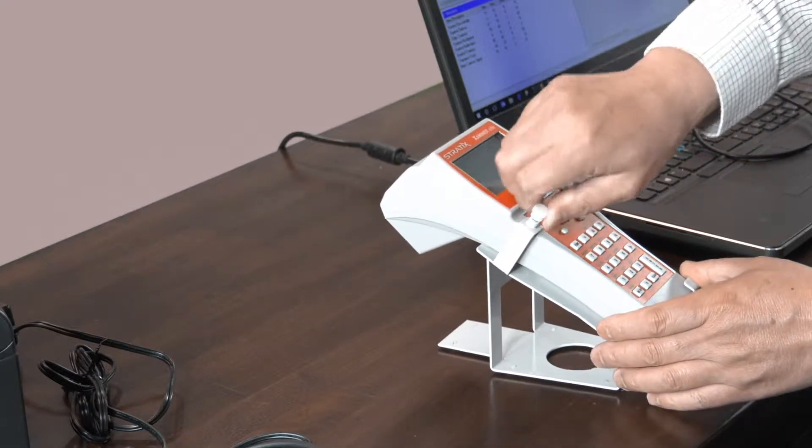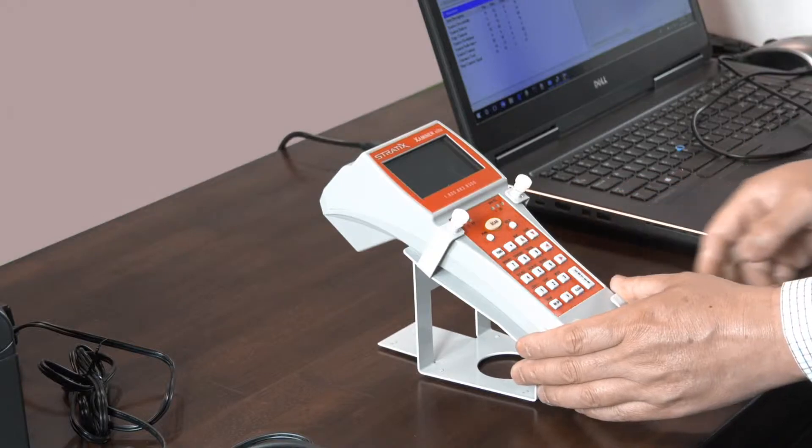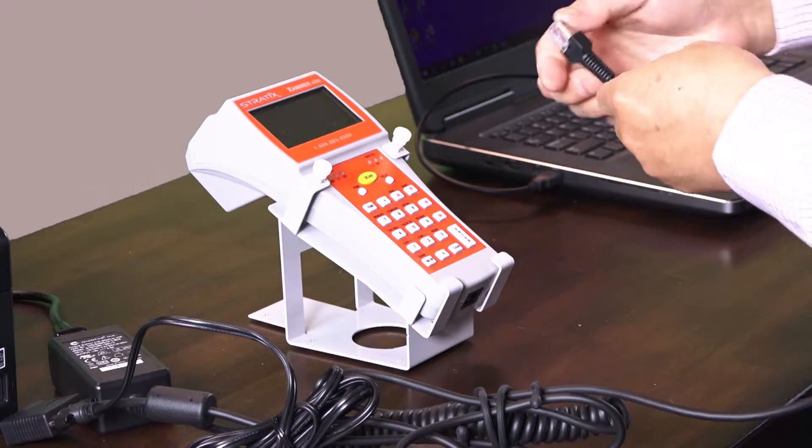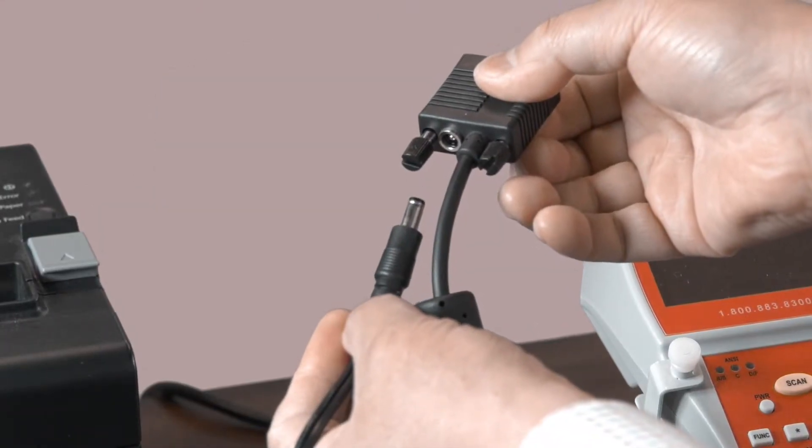Slide it in from the top and secure it with the screw knobs. We'll start by plugging in the communications cable, which has the RJ45 connector on one end and a nine-pin connector on the other end.